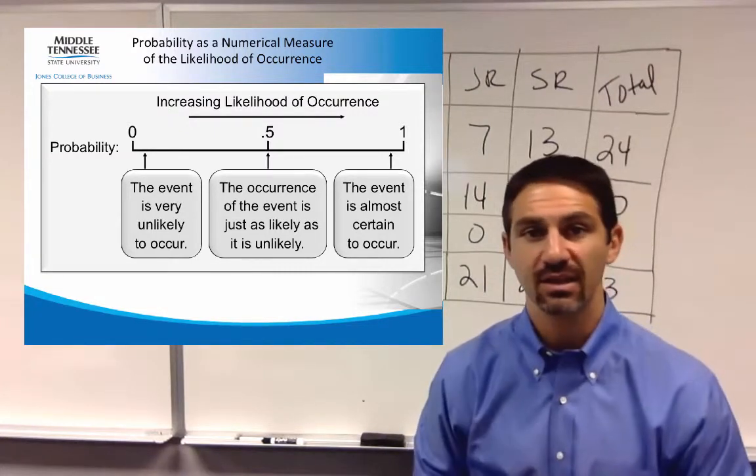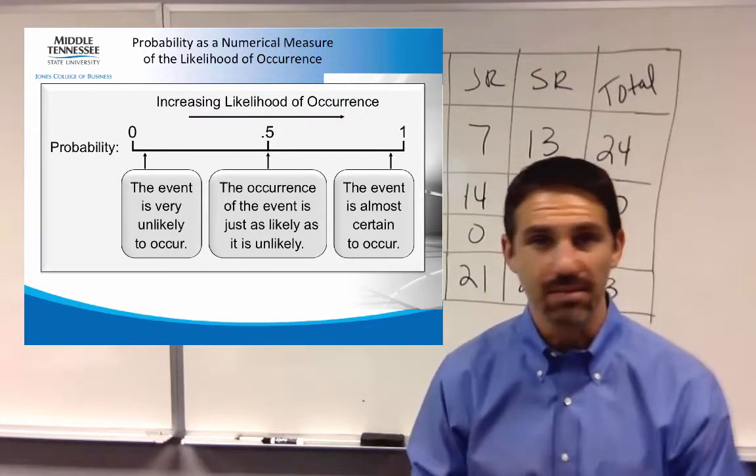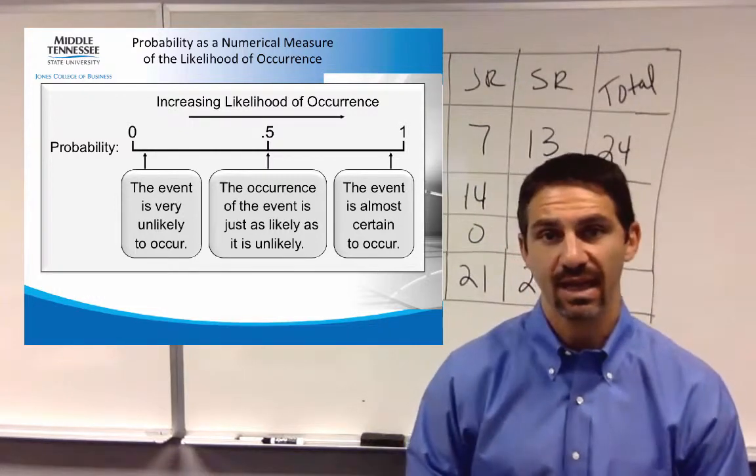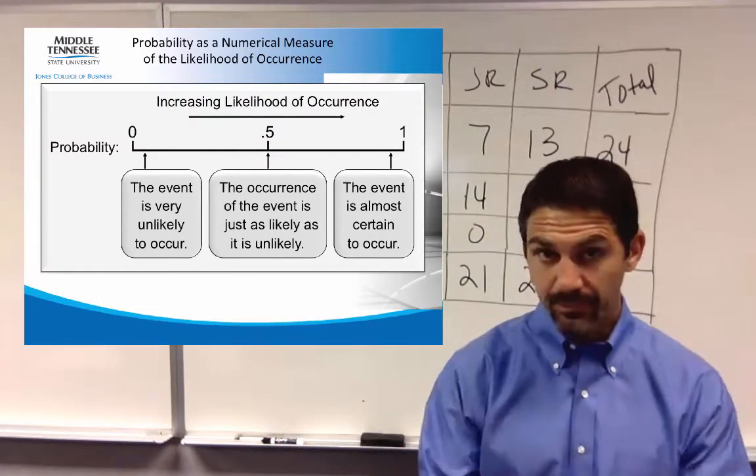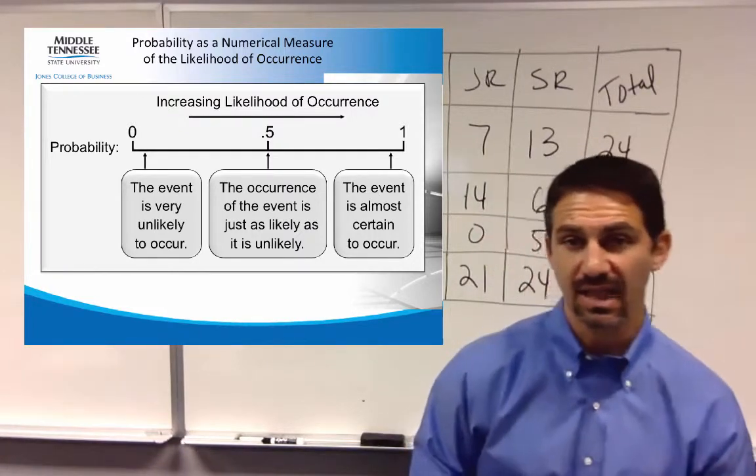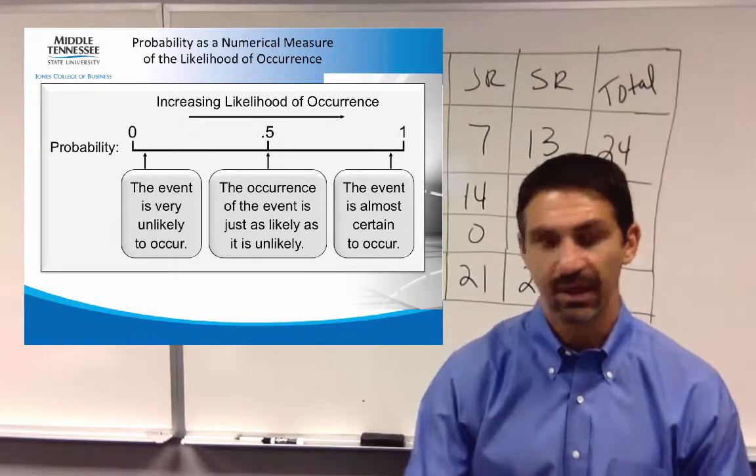We all know some things that are 50%. For example, flip of a coin. No matter what, a flip of a coin, if it's equal on both sides, will be 50% heads, 50% tails. So an example of it being just as likely as it is unlikely would be the flipping of a coin.